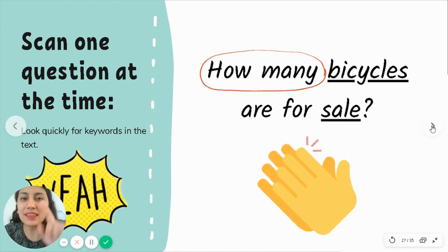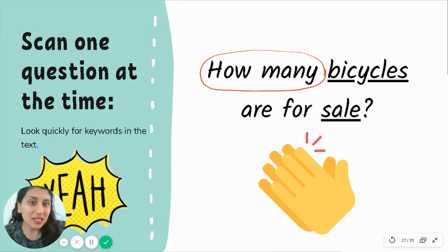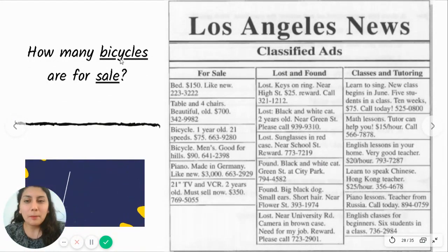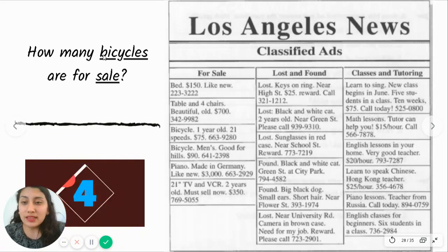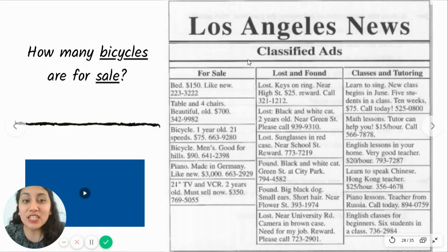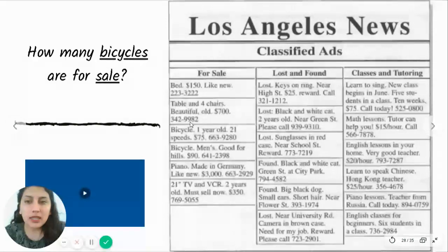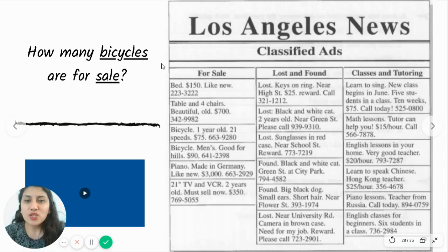You have 10 seconds to find the answer in the text. I selectively read: I skip 'classes and tutoring', 'lost and found', and go to 'sell' — my keyword. I look through: bed — no; table — no; bicycle — yes, maybe; bicycle — maybe; piano — no; TV — no. I stay at 'bicycle'. How many bicycles for sale? I count one, two. So my answer should be two bicycles.